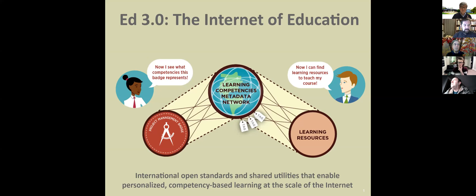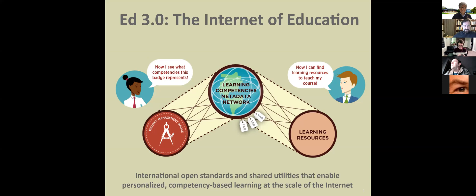We're here to talk about what some are calling Education 3.0, or the Internet of Education. Others call it LER — Learner Employment Record — or ILR, Integrated Learner Record, or the Learning Economy. Whatever it becomes called, it's a vision of the near future in which people's skills become machine-readable data that can be held and controlled from a digital wallet app — an exchange-like currency for learning and employment opportunities on the open Internet, the way that goods and services are exchanged today.